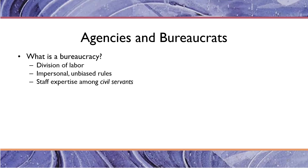Another important feature of bureaucracy is staff expertise among civil servants — the civil servants that work for us are experts in whatever it is they're doing. Dr. Anthony Fauci, who's been in the news a lot during the COVID pandemic, is an expert on infectious diseases trained as a doctor. The federal government hires doctors, lawyers, engineers, architects, nurses, geologists, astronomers, physicists — you name the profession, there's probably one that works in the government because they have expertise. And a bureaucracy has obvious hierarchy — there are people who report to people who report to people.